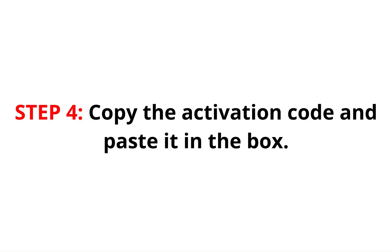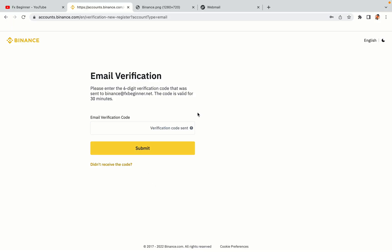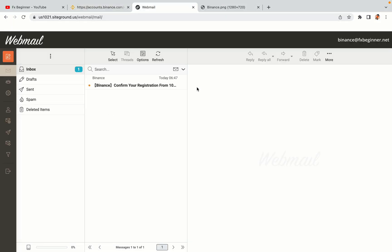Step 4: a confirmation code will be sent to your mail. Open your mail inbox, copy the code and paste it in the box to fully activate your Binance trading account.